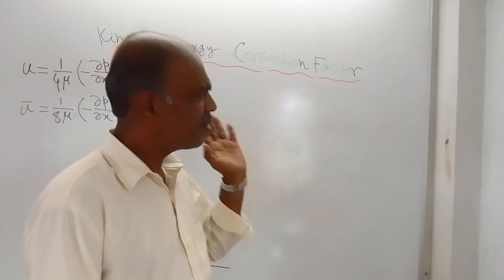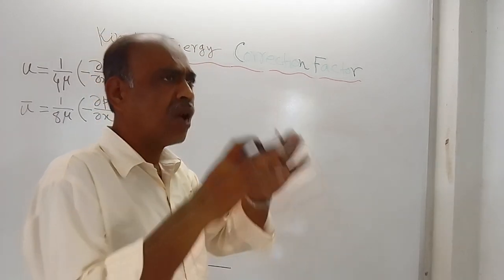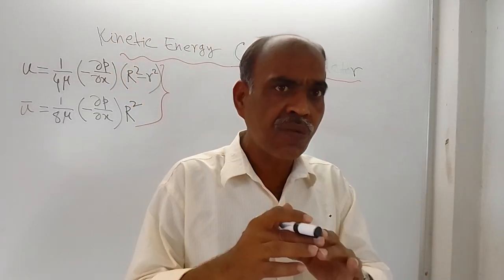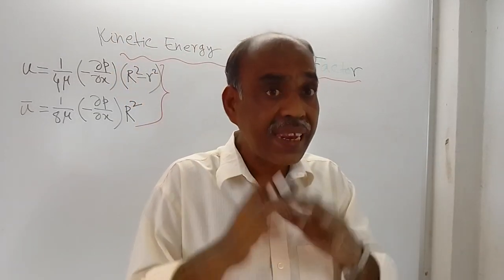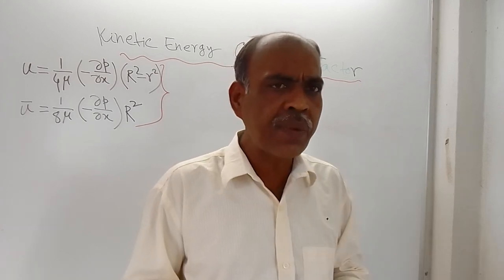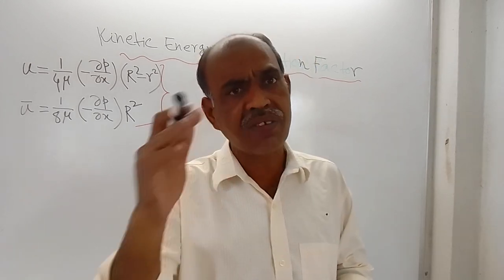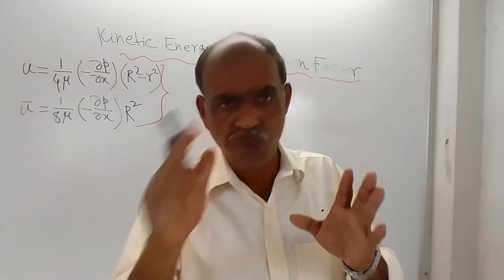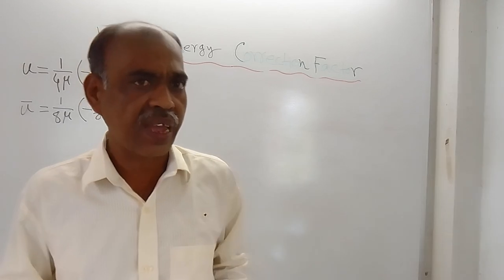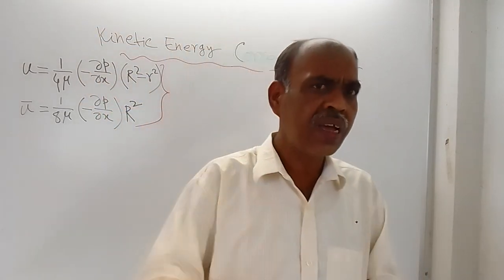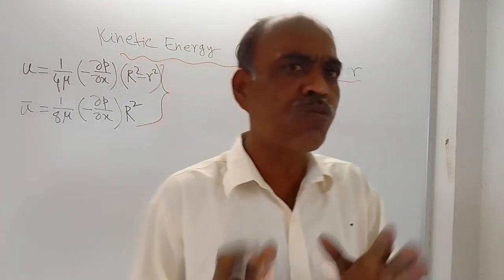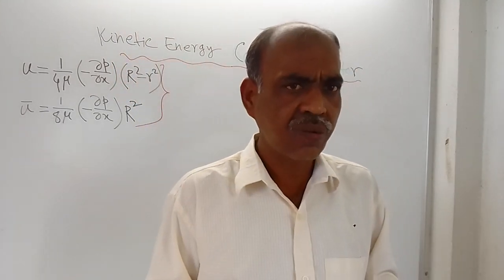Here also there is a circular pipe and an elementary ring is taken for the calculation. The area of the elementary ring is 2πr·dr, where r is the radius and dr is the width of the ring element. So the elementary area dA is 2πr·dr.